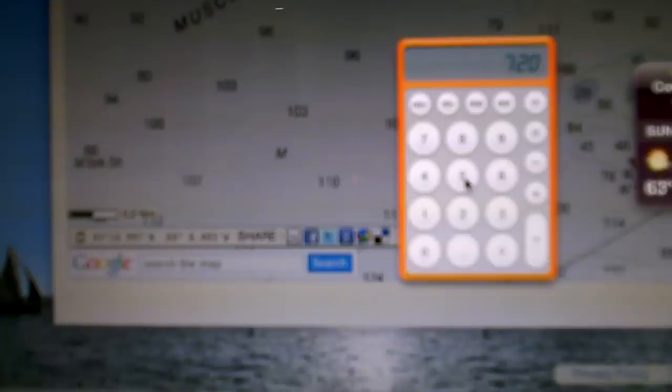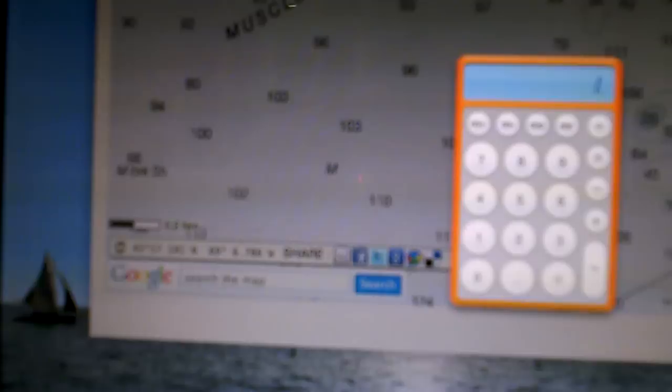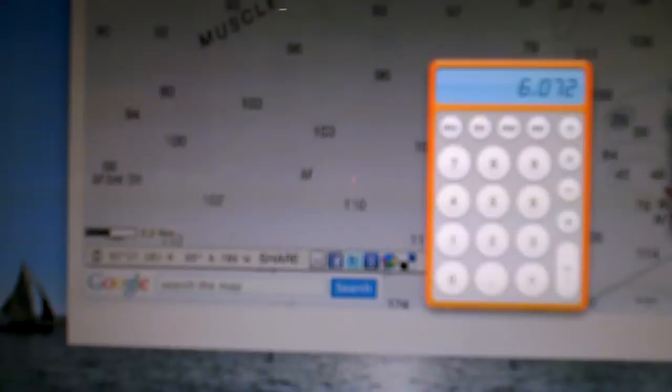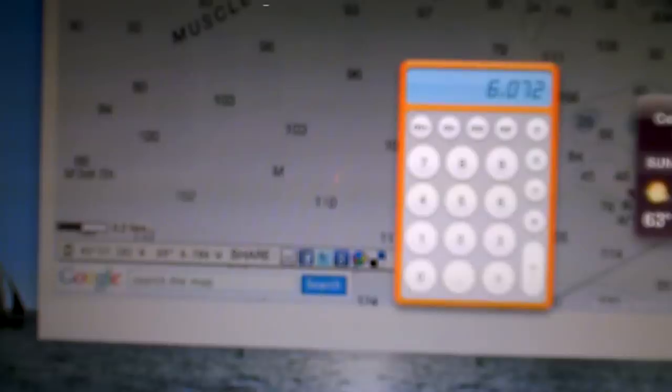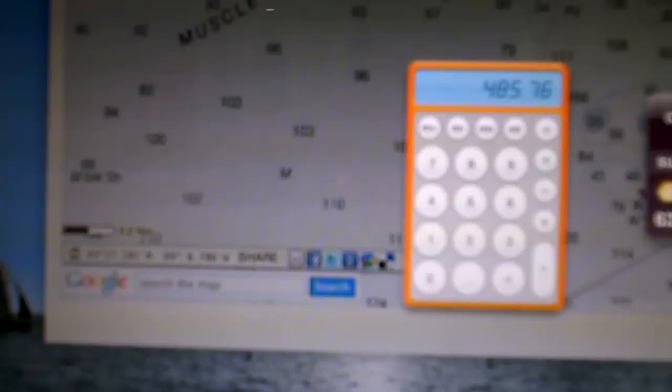Let's look at 5,280 feet in a statute mile times 1.15 equals how many feet? 6,072. And we were off by, what did we say? 0.08 times equals 500 feet in the westerly direction. Well, you might miss this in the fog if you're looking for a can or a nun, but if you're headed for an island, you're spot on.